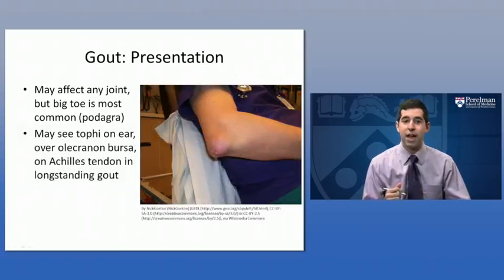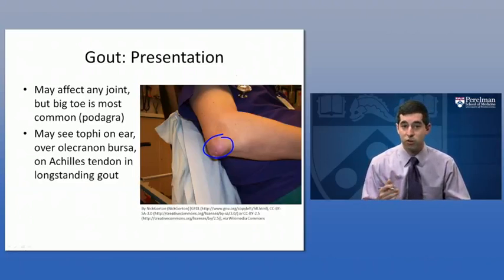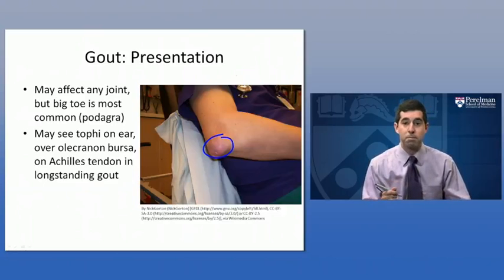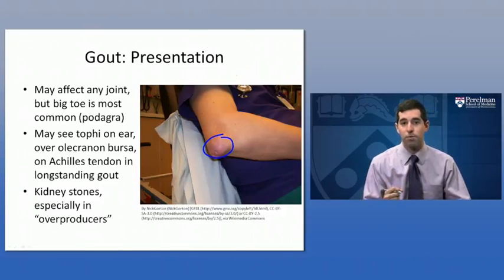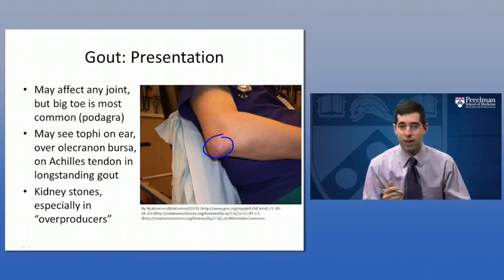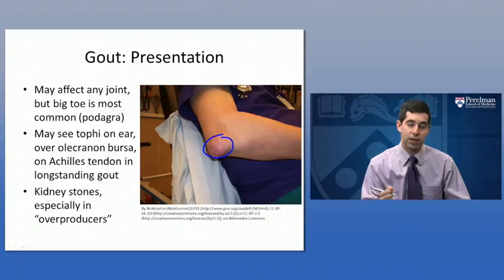Longer term, someone may show tophi — particularly over the olecranon bursa, over the Achilles tendon, and on the ears as well. These tophi are big deposits of monosodium urate crystals within the skin and soft tissues. People with gout may also get kidney stones, particularly in the overproducers, as uric acid deposits and precipitates within the kidney to form a stone. It's more common in overproducers because under-excretors can't get uric acid into the urine, so it's unlikely to precipitate there.